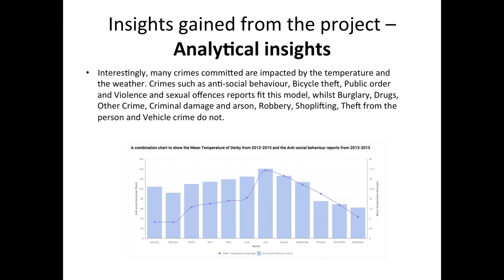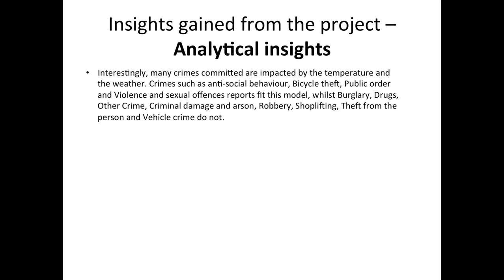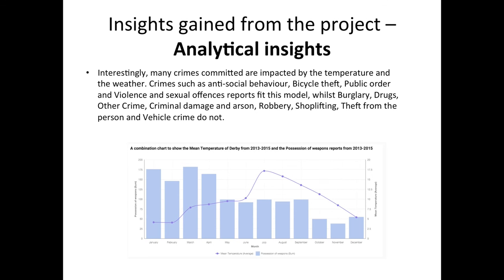I was really interested in the relationship between temperature and crime data. This shows antisocial behaviour reports — something that happens a lot in Derbyshire — and you can see it's almost driven by the temperature: as the temperature gets warmer, more people are outside and more antisocial behaviour is happening. In contrast, possession of weapons, as we've discussed already, has no correlation whatsoever to temperature.